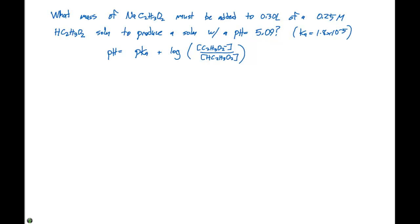We're given that the pH is 5.09. Our Ka is 1.8 times 10 to the minus 5. If we take the negative log of that, we get 4.74. That's gonna be plus the log of X, which we'll say is the concentration of the acetate ion, divided by the concentration of the acetic acid which is 0.25 molar.